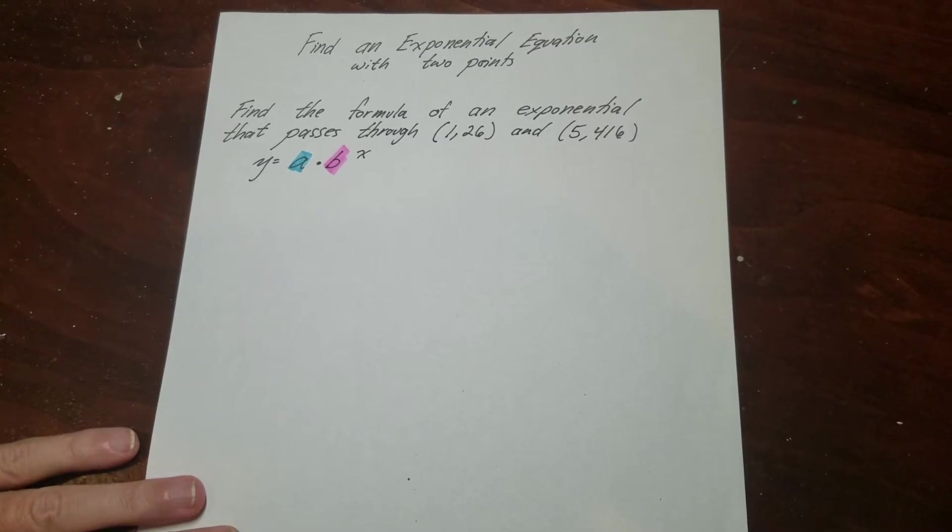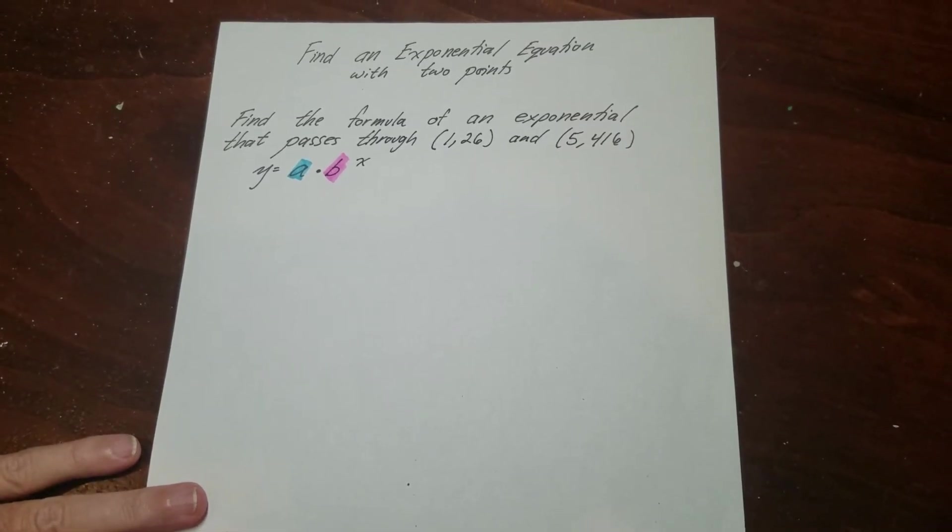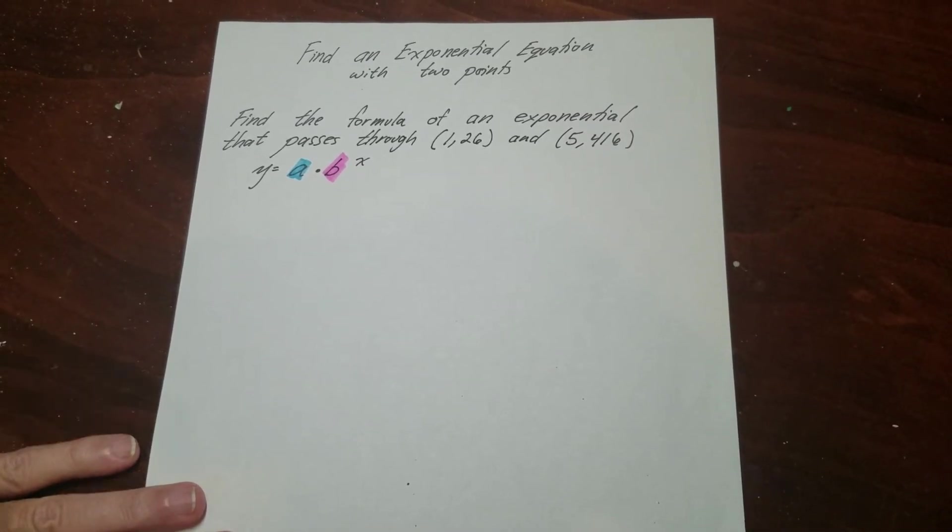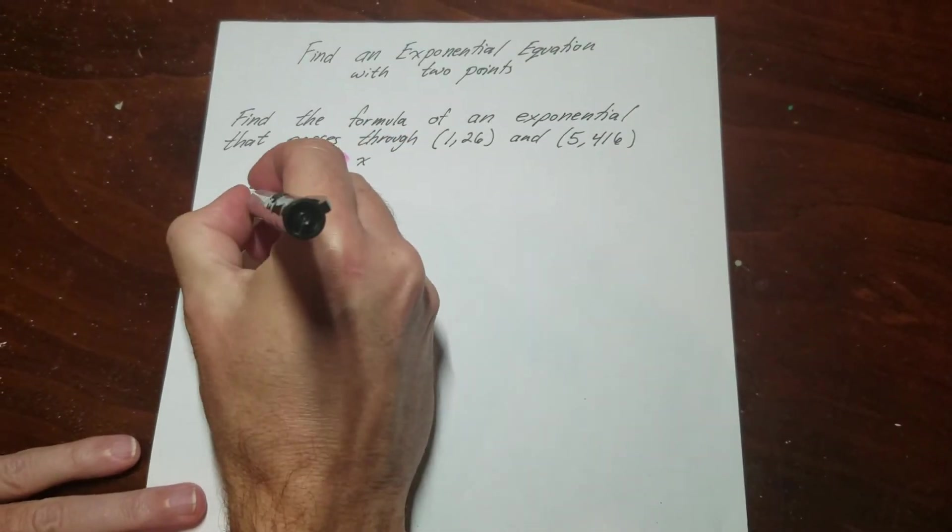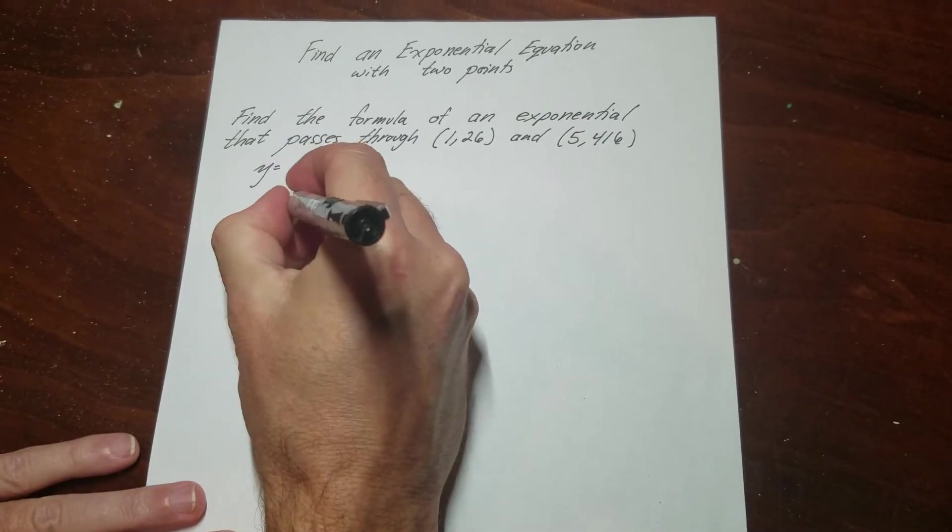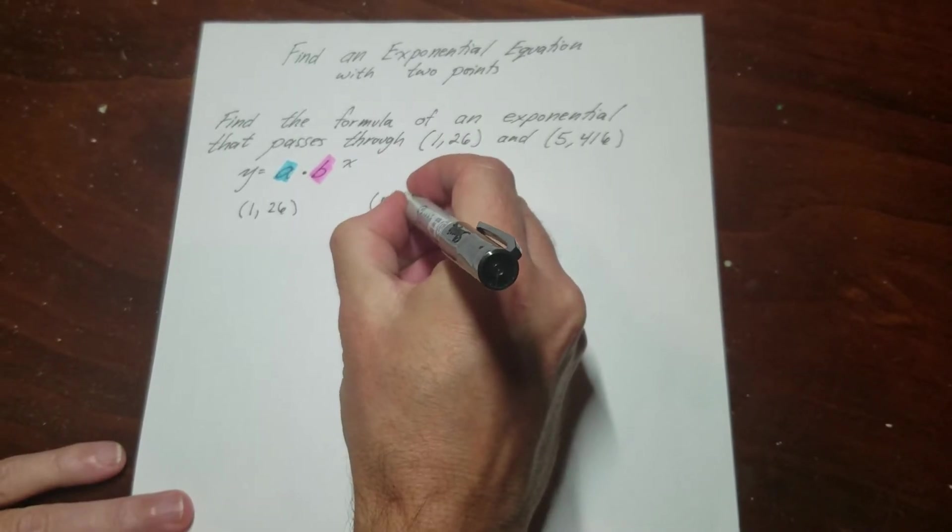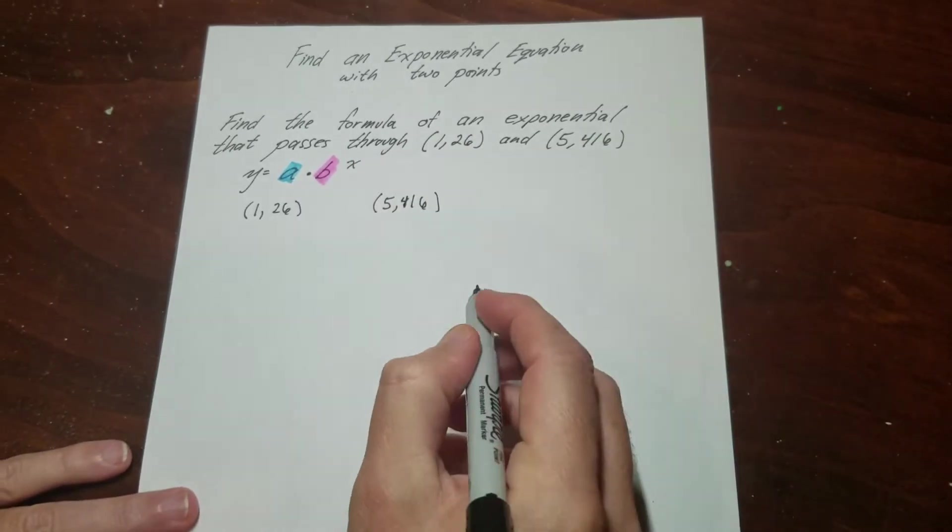So what we're going to do is use this formula here: y equals ab to the x power. That's the generic formula for an exponential equation. So we're going to set up a system with this. I'm going to use this point, 1 and 26, and then this one, 5 and 416, just so when I set these up you kind of know where everything came from.